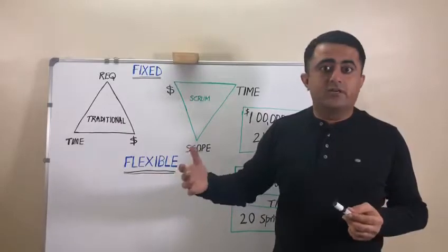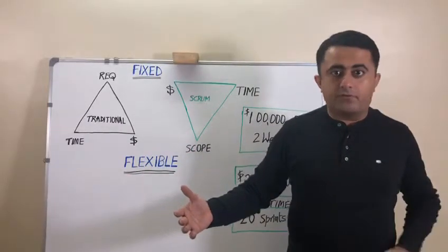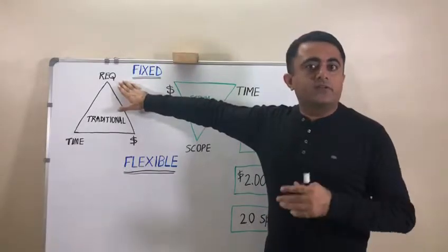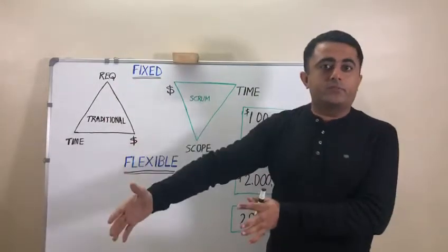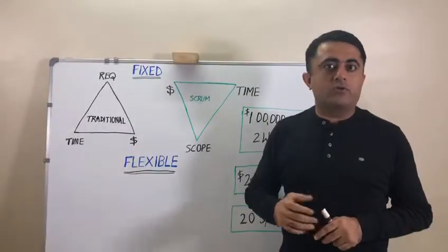Let's take an example of a project that starts on January 1 and ends by the end of December. Here, you try to identify the scope and fix up the requirements in the beginning. Try to execute it and deliver to the time and the budget that you have planned.